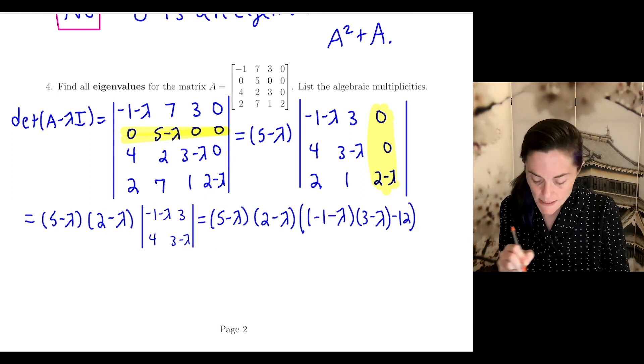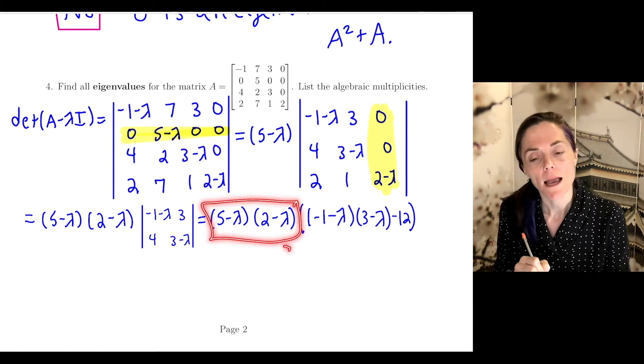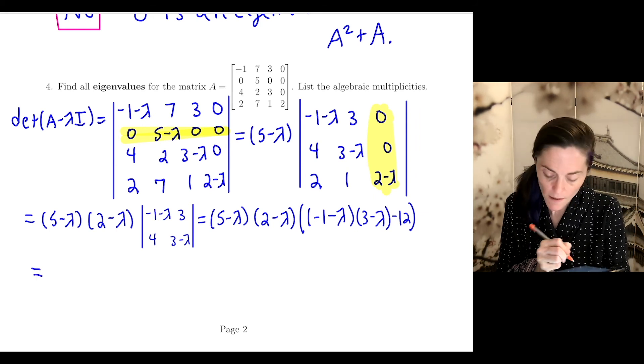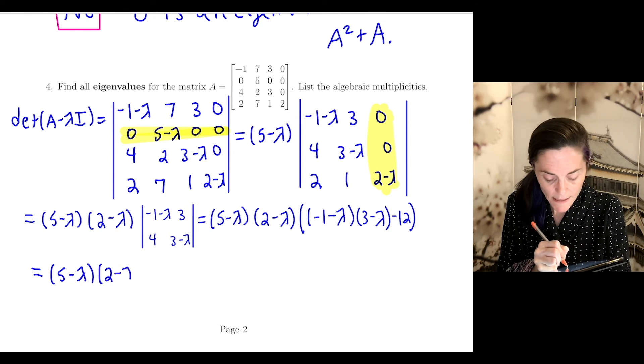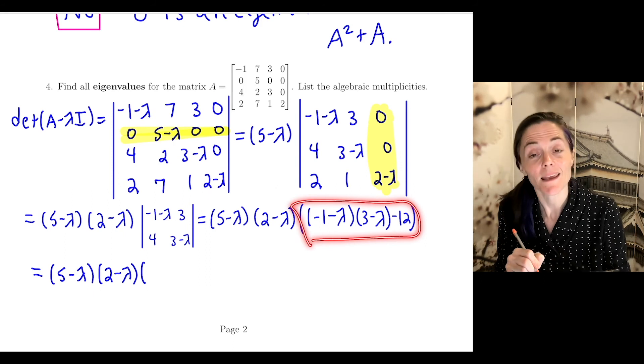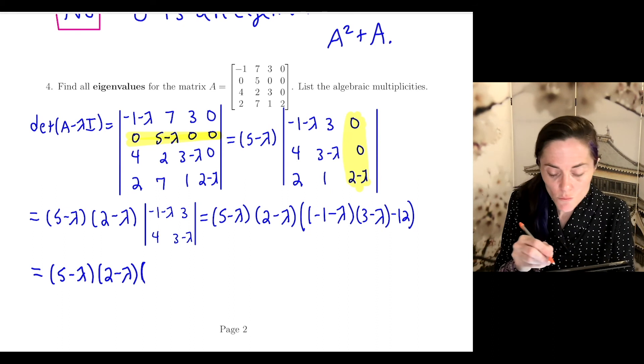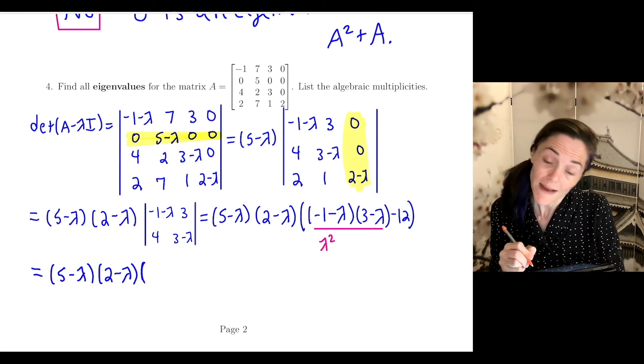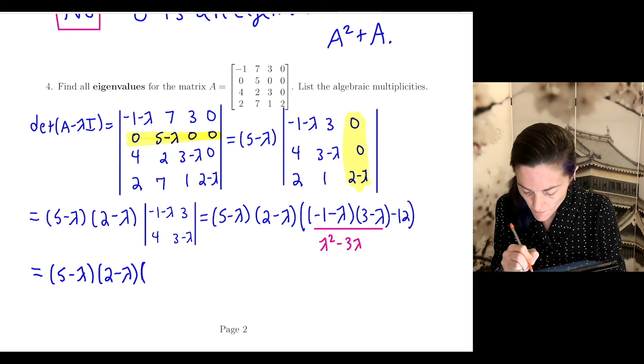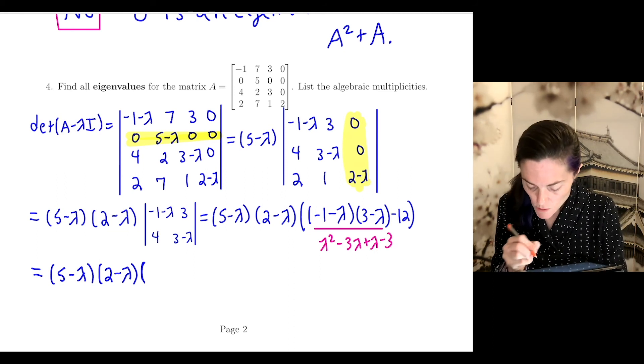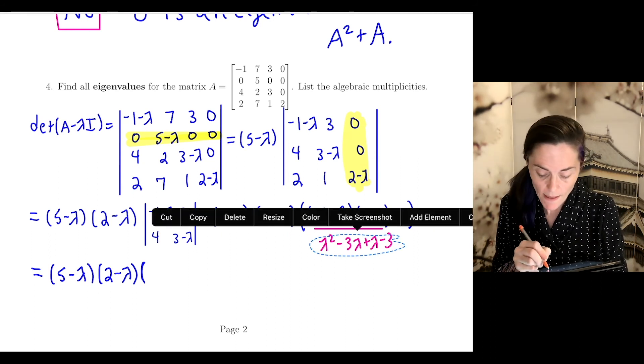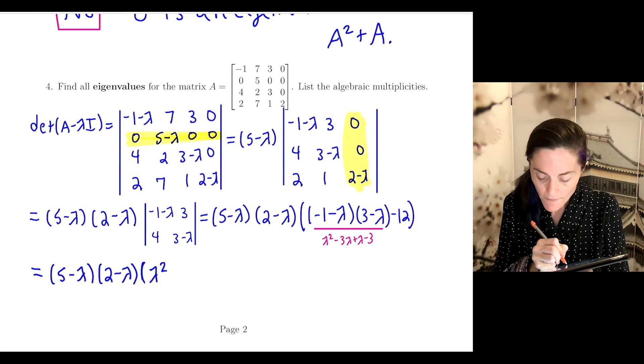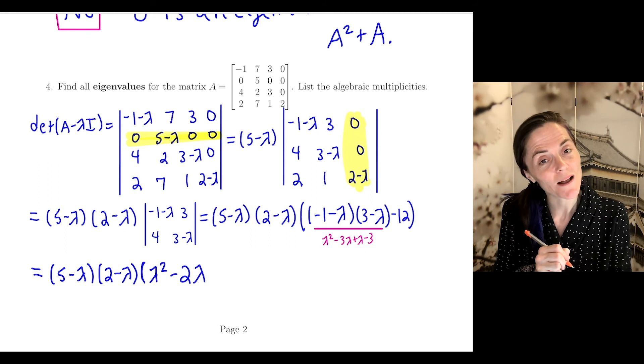We have (-1 - λ) times (3 - λ) minus 12. I'm going to leave these all out front. I don't want to multiply everything out because then I'll be left with trying to factor a degree 4 polynomial, which is not easy. So I will leave (5 - λ) and (2 - λ) as is. Then we will multiply out everything in here and refactor the quadratic that remains. This part is lambda squared minus 3λ + λ minus 3. So I have lambda squared minus 2λ, and then minus 3 minus 12, which is negative 15.